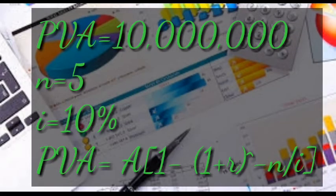From our question, the present value is 10 million, n is 5 years, and the interest rate is 10 percent. We shall use the formula of present value of annuity to calculate the equal installment to be paid each year: A × [1 − (1 + i)^(−n)] / i.